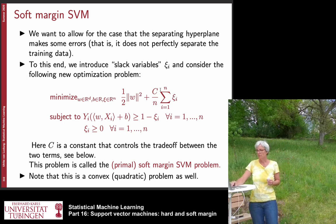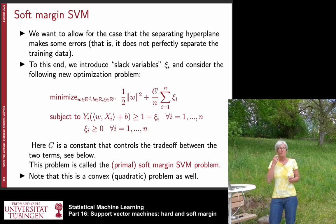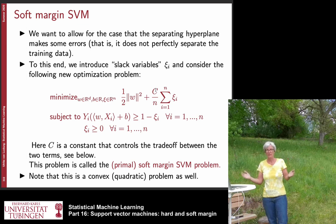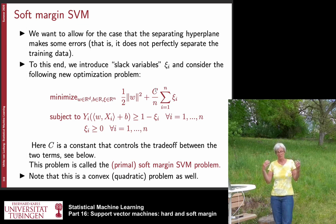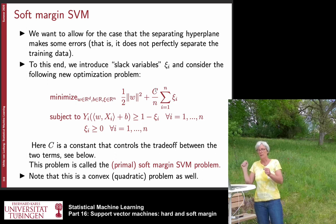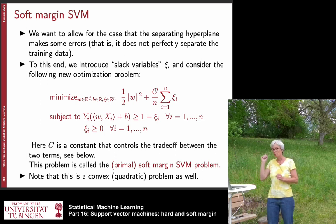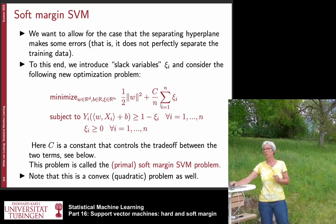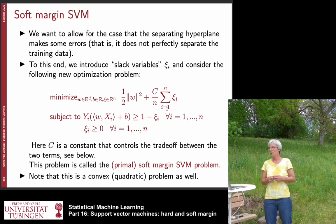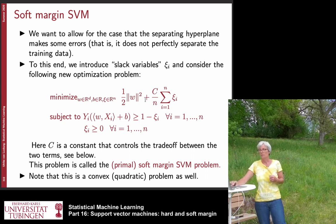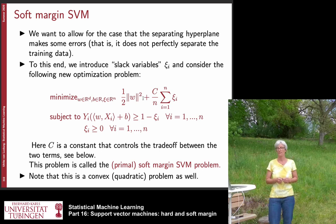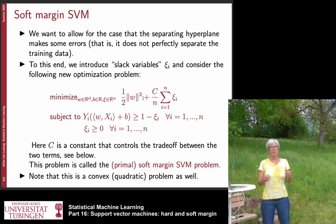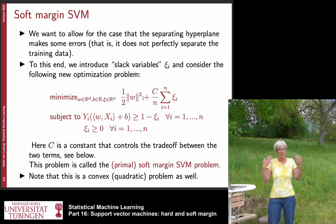The constant C is called the C parameter of the SVM. It is a trade-off constant: a large C means we strongly penalize points on the wrong side, approaching the hard margin case; a small C means we barely care about violations and focus on a large margin. This soft margin condition is why the algorithm is called the soft margin SVM. The problem remains a quadratic optimization problem, now with n additional slack variables ξᵢ.